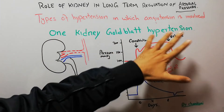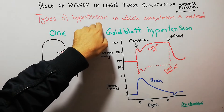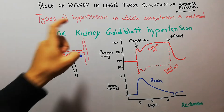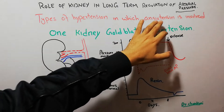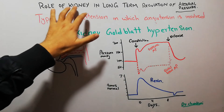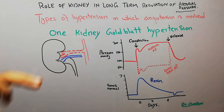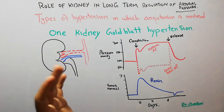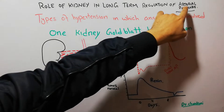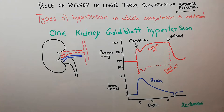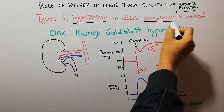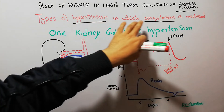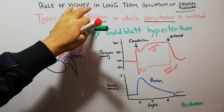Today we are going to discuss one kidney Goldblatt hypertension. We are discussing types of hypertension in which angiotensin is involved. We have discussed in detail one type due to renin-secreting tumour or infusion of angiotensin. We are discussing the role of the kidney in long-term regulation of arterial pressure and the different mechanisms through which the kidney regulates arterial pressure.